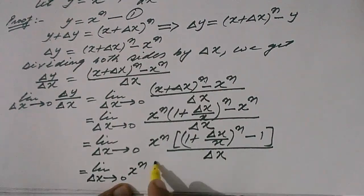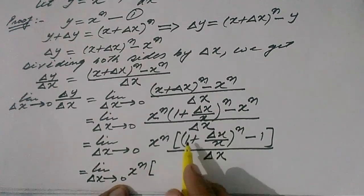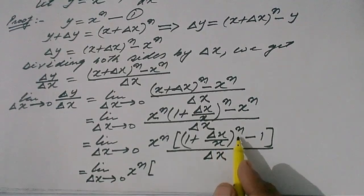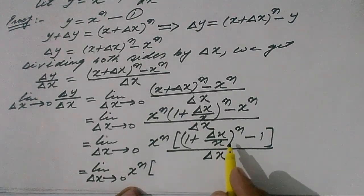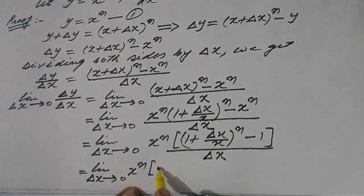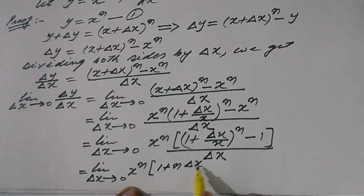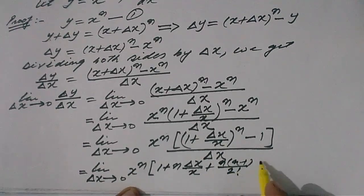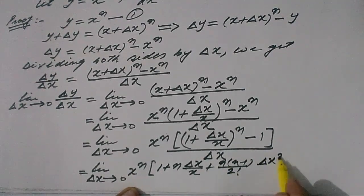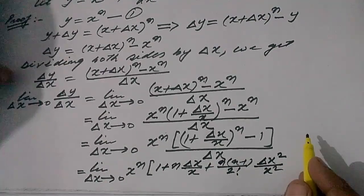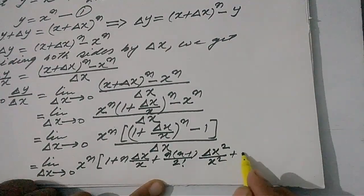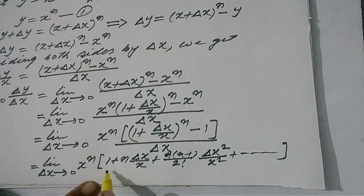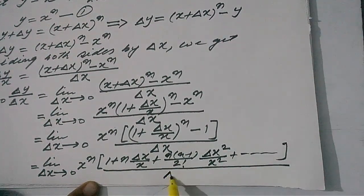So now limit delta x tends to 0, x raised to the power n. Inside this square bracket there is 1 plus delta x upon x, raised to the power n, so we are going to expand this with the help of the binomial theorem. Using binomial theorem, expanding this as 1 plus n delta x upon x, plus n(n minus 1) upon factorial 2 times delta x squared upon x squared, plus so on to infinity, divided by delta x in the denominator.